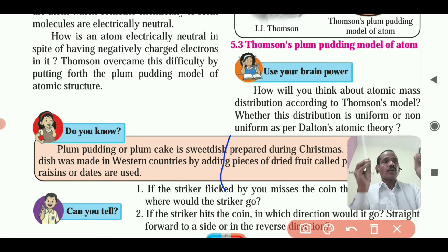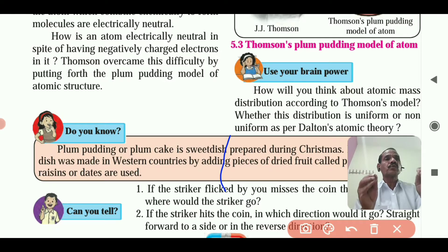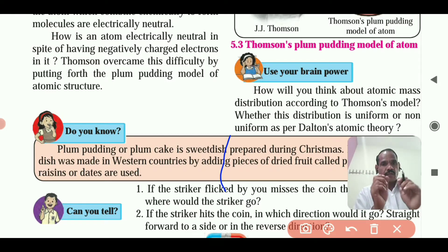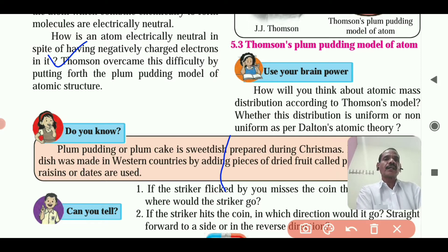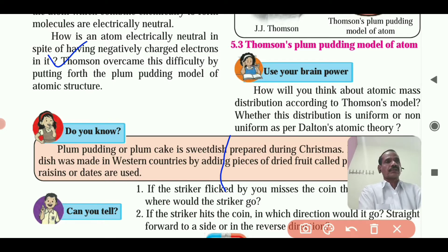How is an atom electrically neutral in spite of having negatively charged electrons in it? Thomson overcame this difficulty by putting forth the plum pudding model of the atomic structure.